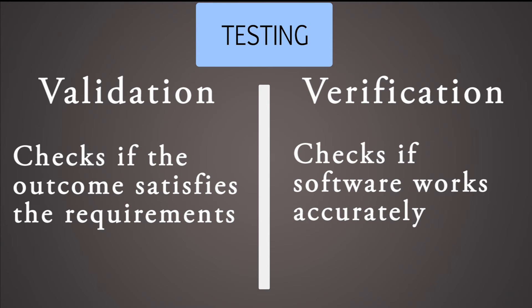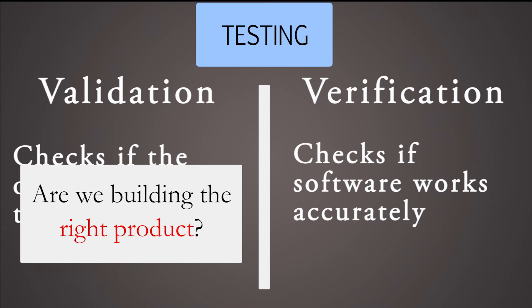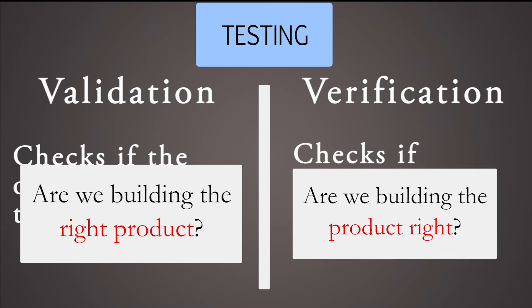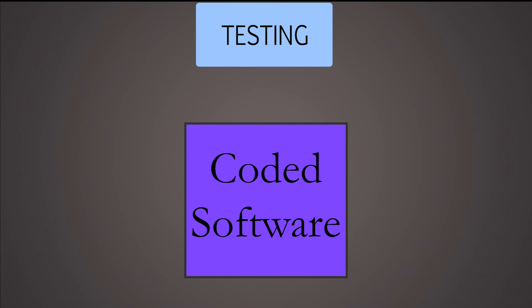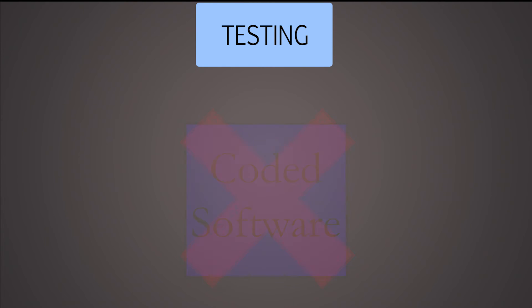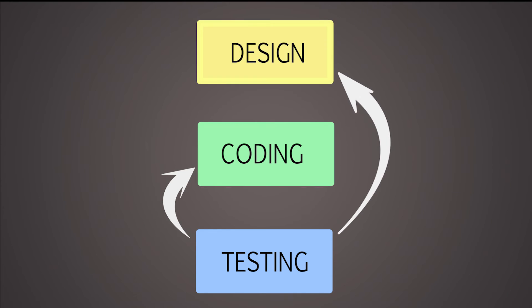Consider it like this: software validation answers the question, are we building the right product, while software verification answers the question, are we building the product right? If the program presents any problem during the testing process, changes need to be made to the code or even to the design of the program. This is the reason why in most cases the testing phase takes around 50% of the whole costs and resources of the software development process.